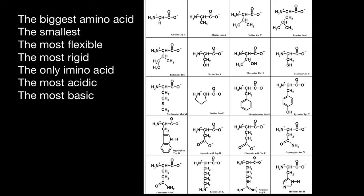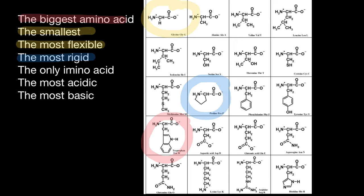Let me circle some amino acids to summarize. The biggest amino acid is tryptophan, the smallest is glycine, which is also the most flexible, and the most rigid is proline. Proline is also unique in another way — all other amino acids have a free NH2 amino group, but proline's R group connects back to the nitrogen, forming a ring.